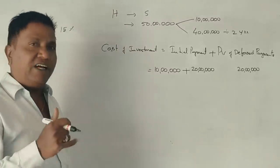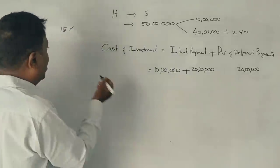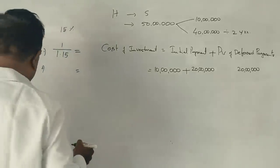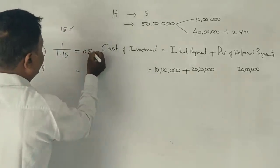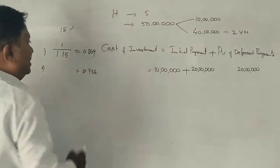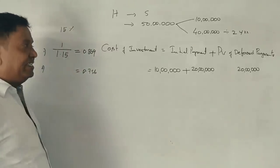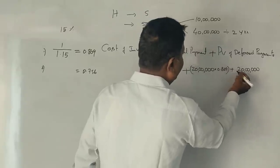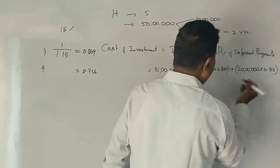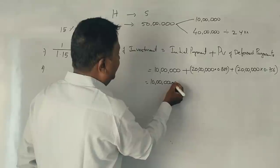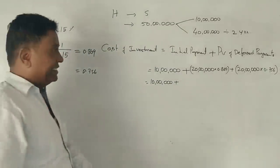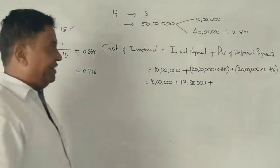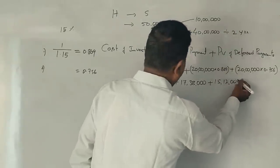The discount factors at 15% are: year 1 = 0.869, year 2 = 0.756. So: 20 lakhs × 0.869 = 17 lakh 38,000 rupees. And 20 lakhs × 0.756 = 15 lakh 12,000 rupees. Total present value of deferred payments = 17,38,000 + 15,12,000 = 32,50,000 rupees.